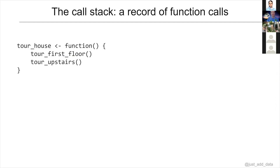A call stack is a record of all of the functions that another function called to get its job done. I'll oversimplify a little, but I'll give you an example to help understand how profiling works. Let's say we're looking to buy a house — mortgage rates are at an all-time low, so let's just pretend.